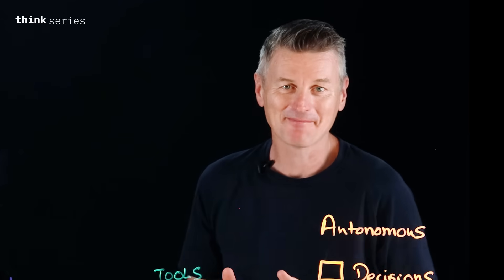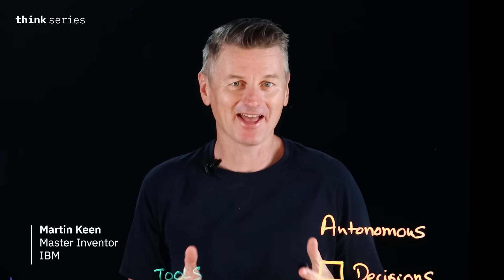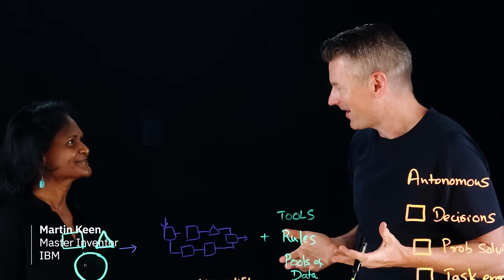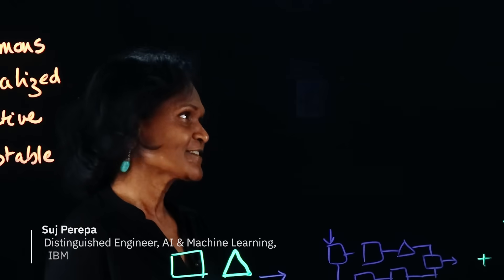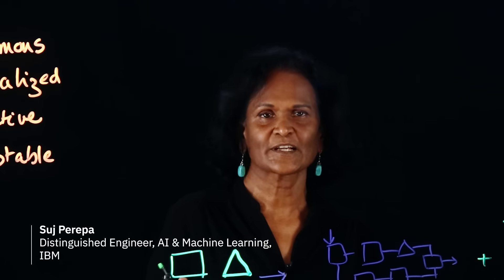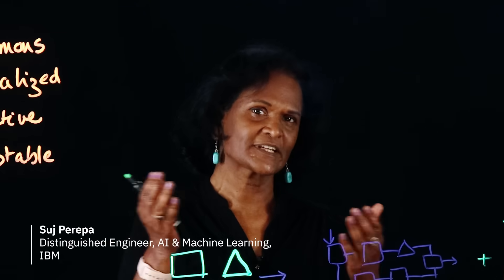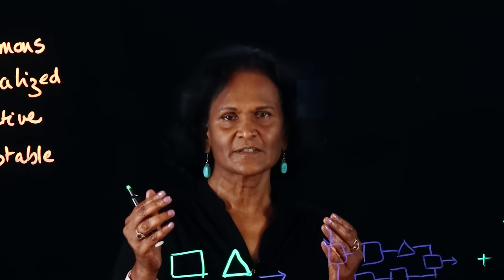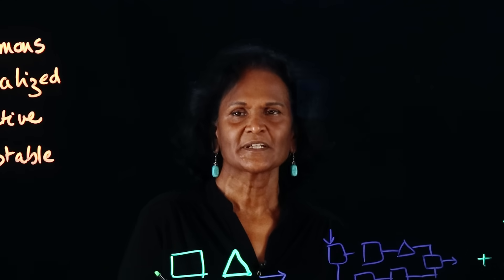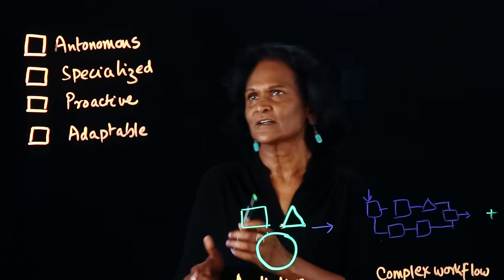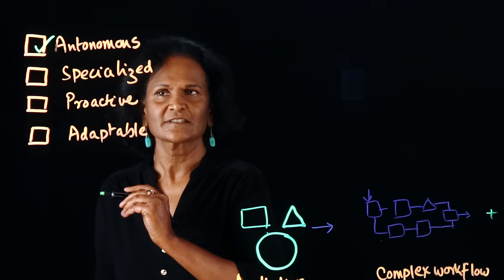There's a lot of talk about AI agents. So, what's the deal with AI agents? AI agents are really important. They take the large language models to the next step of execution, autonomous decision-making and execution. The main characteristics of AI agents are that they're autonomous, as mentioned.